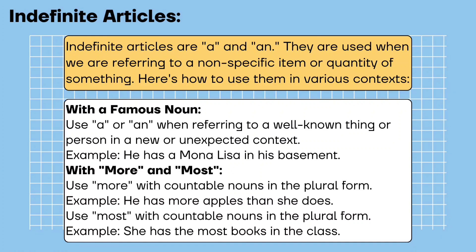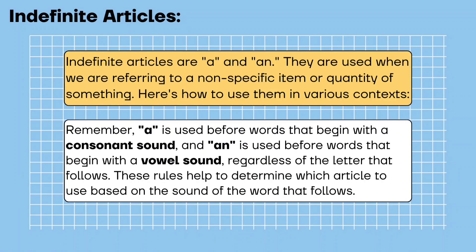With more and most: use 'more' with countable nouns in the plural form. Example: he has more apples than she does. Use 'most' with countable nouns in the plural form. Example: she has the most books in the class. Remember: 'a' is used before words that begin with a consonant sound, and 'an' is used before words that begin with a vowel sound, regardless of the letter that follows.